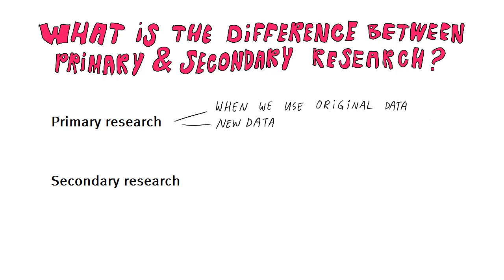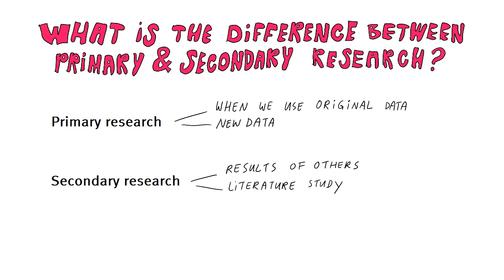Secondary research is when we study the results of others. Because these results are often published in scientific journals and books, we also refer to this as a literature study. And because you often sit behind a desk reading these articles, it's also named desk research. Secondary research is basically the systematic review of existing knowledge.